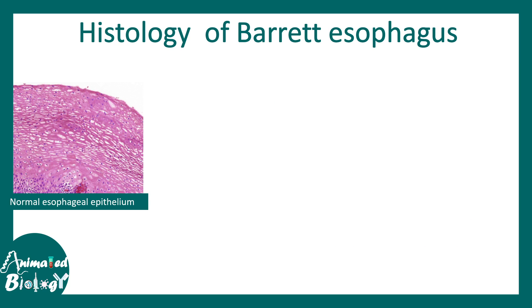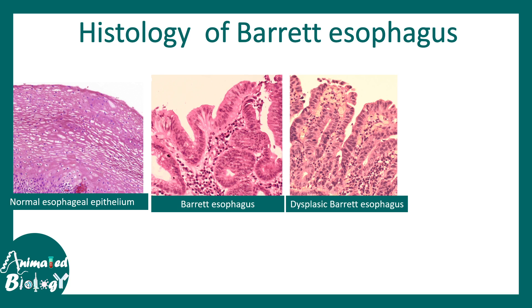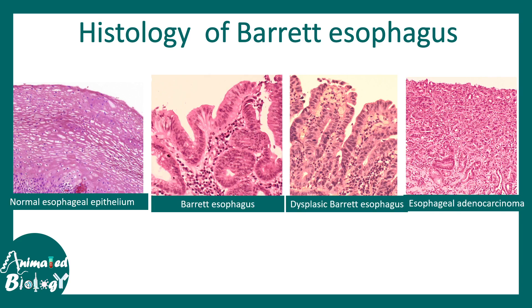This is how normal esophageal epithelium looks — clearly squamous — and Barrett's esophagus would have completely altered morphology. These images, taken from a research paper linked in the description, show how dramatic the difference is. Barrett's esophagus if untreated can progress to dysplastic Barrett's esophagus, and eventually lead to cancer. In esophageal adenocarcinoma, heterogeneous cell populations are present with no squamous or columnar organization.